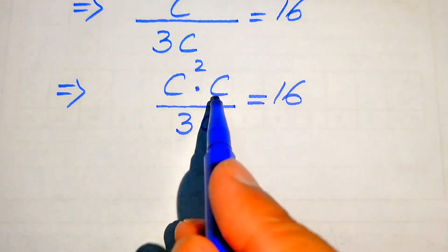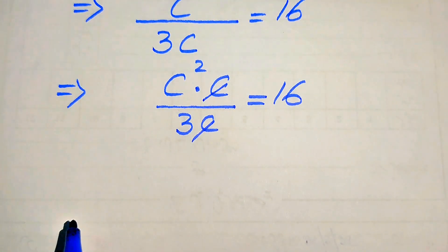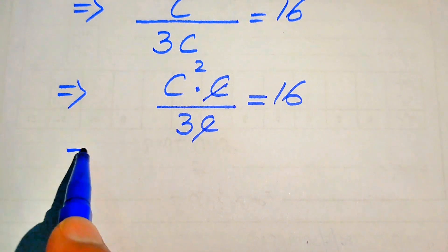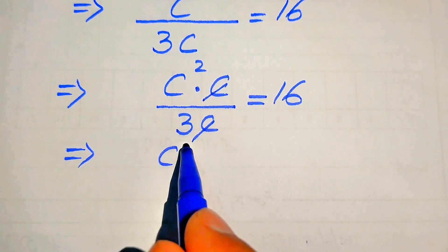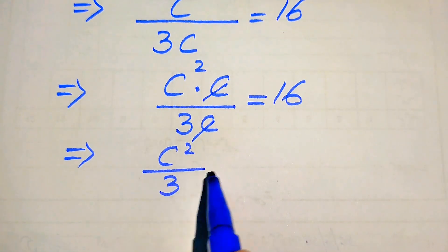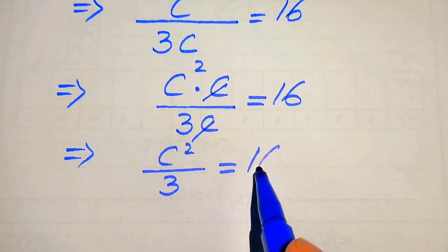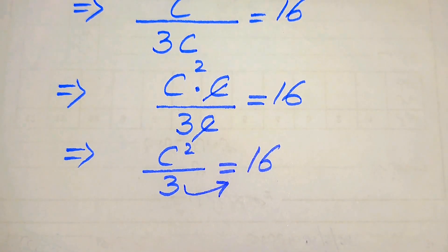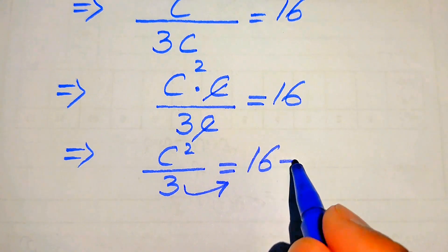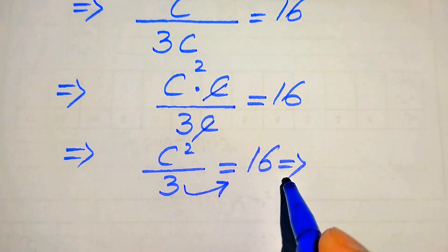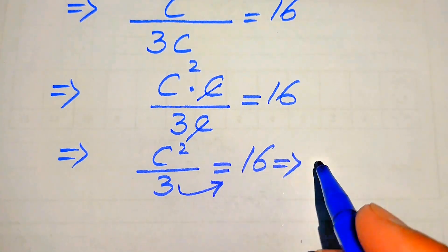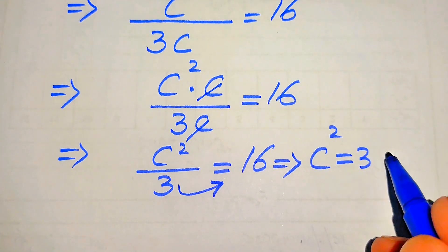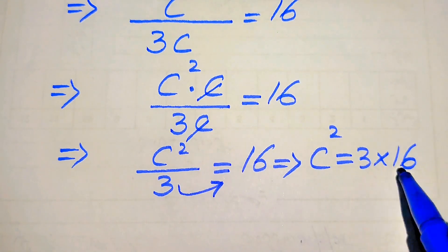You see here this c is cancelled out by this c, and in the next step we get c squared divided by 3 equals 16. Now we move this 3 to the right-hand side — when we move it to the right-hand side it is multiplied — and we get c squared equals 3 multiplied by 16.